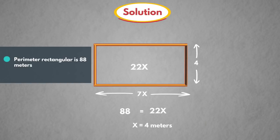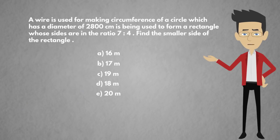From this, smaller side of the rectangle is equal to 4 × 4 is equal to 16 m. So, the answer is option A, 16 m.